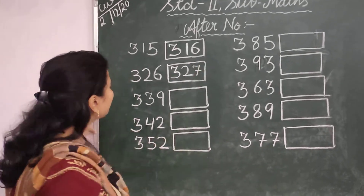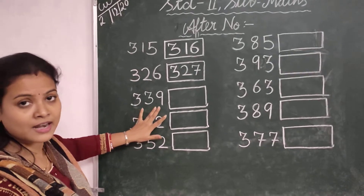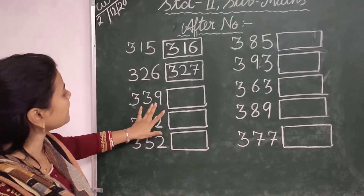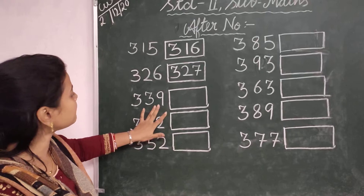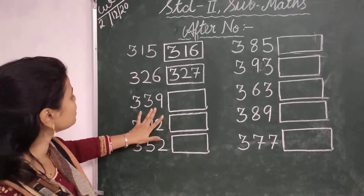Then 339. Here 39. The number that comes after 39 is 40.